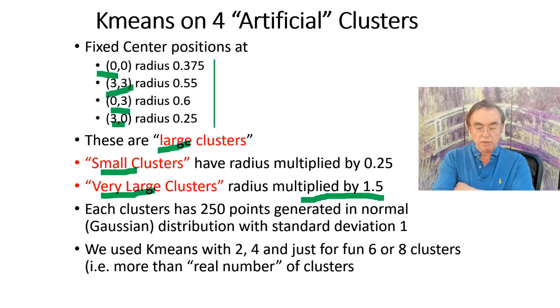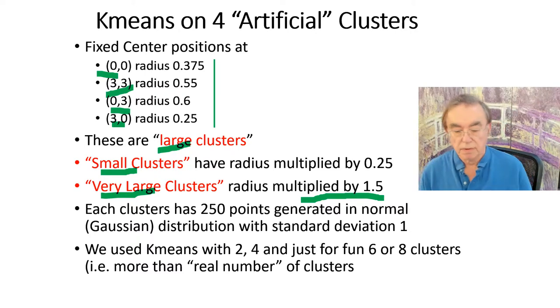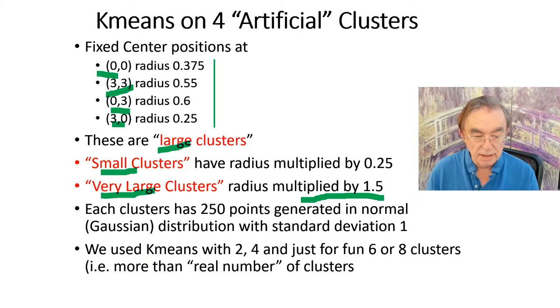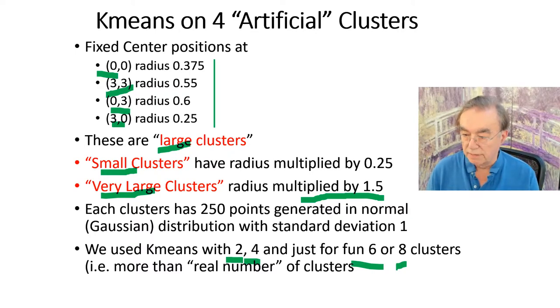I generate 250 points for each cluster. They have normal Gaussian distributions with standard deviations equal to the radius. We generate the x and y coordinates separately. We use K-means with various numbers of clusters: two, four, six, and eight. We can see different answers of various degrees of interest when we make different choices.